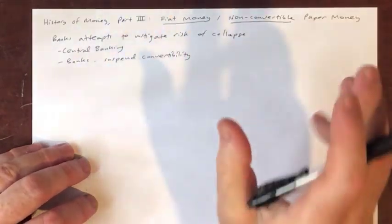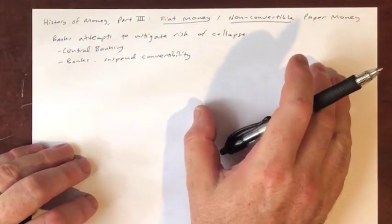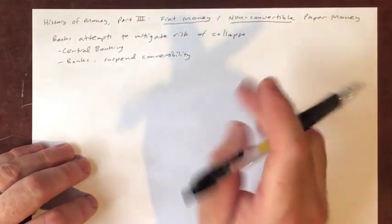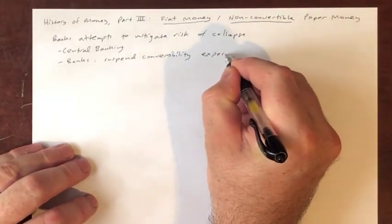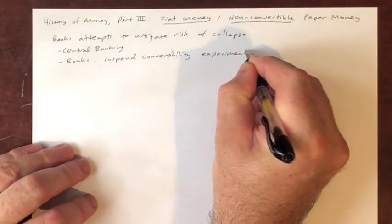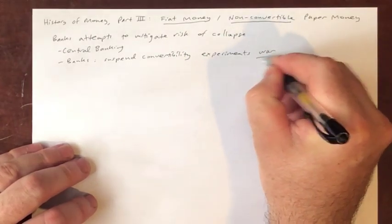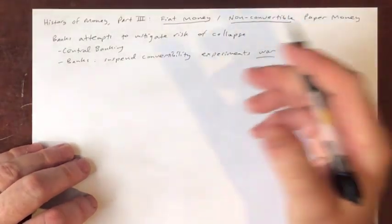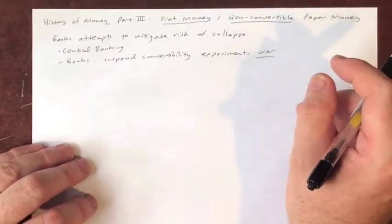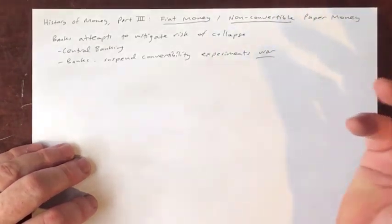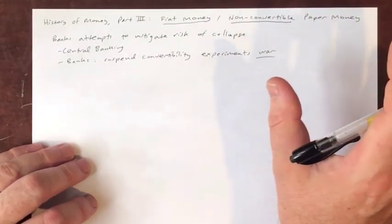Now, initially when this occurs historically, these are experiments — associated experiments. They're usually associated with some kind of disaster, some kind of war, almost always war, because war is just so ruinously expensive.